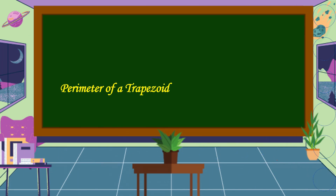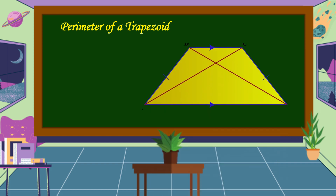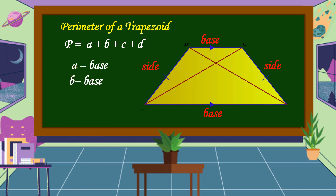Next is the perimeter of a trapezoid. This is a trapezoid — we have two bases and two sides. To get the perimeter, we use the formula P = A + B + C + D, where A and B are the bases, and C and D are the sides.